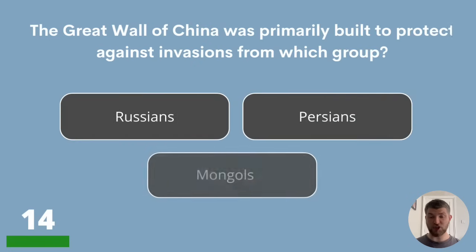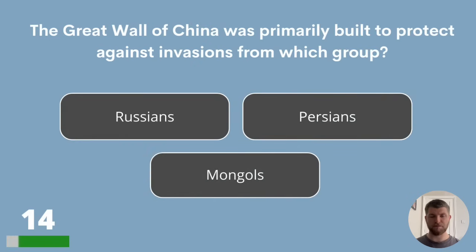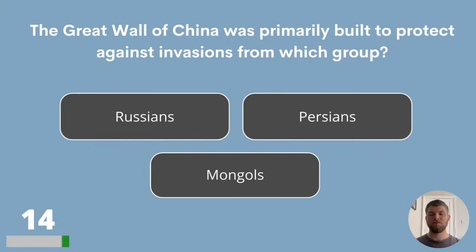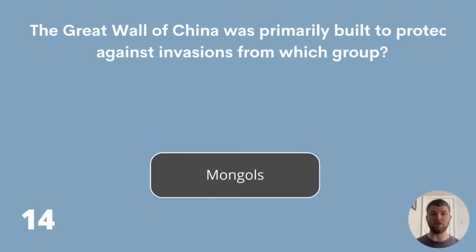Question 14. The Great Wall of China was primarily built to protect against invasions from which group? Russians, Persians or Mongols? The answer is Mongols.